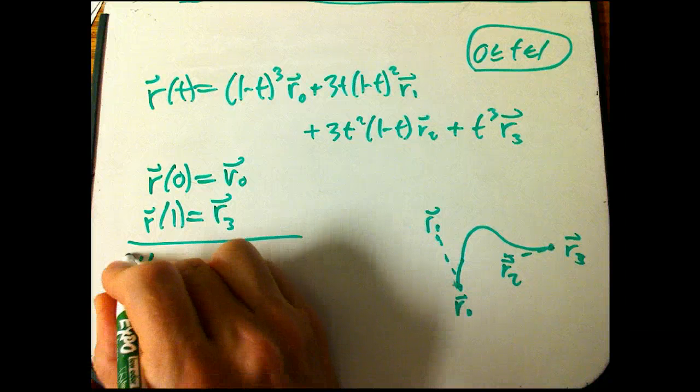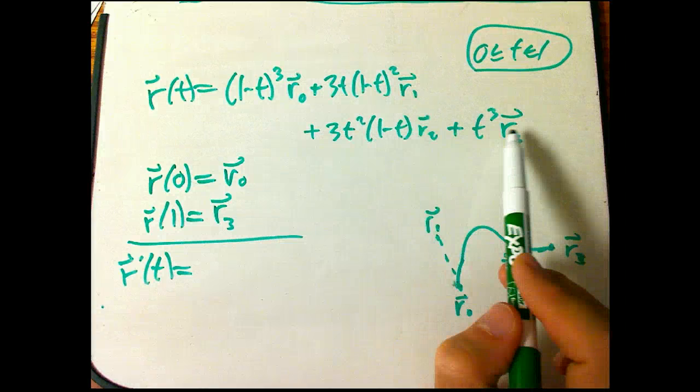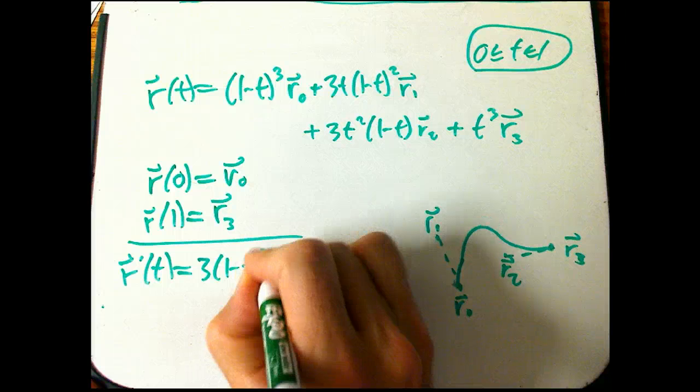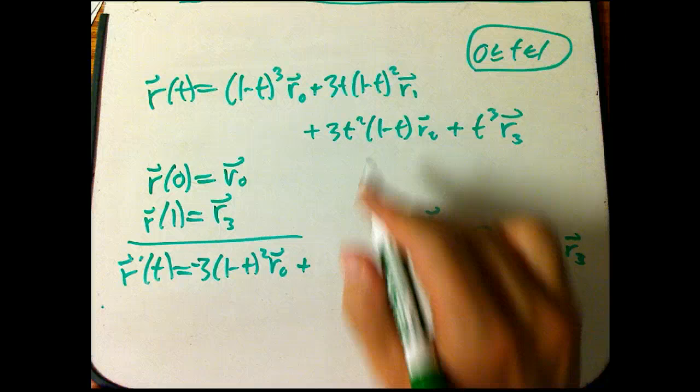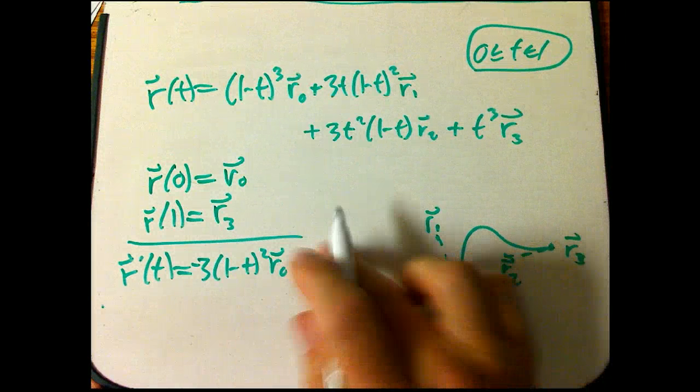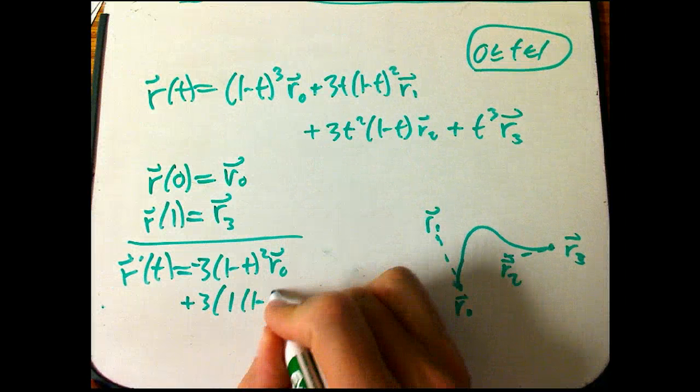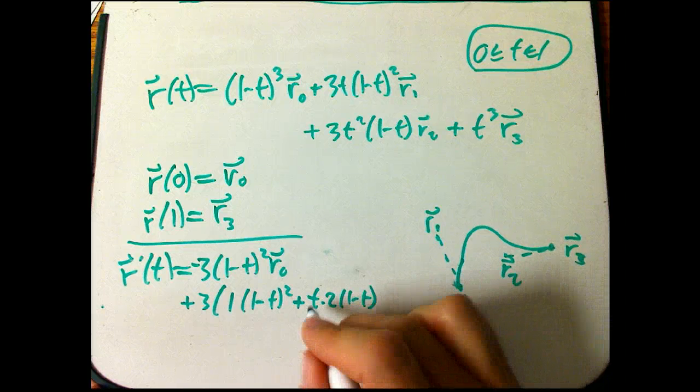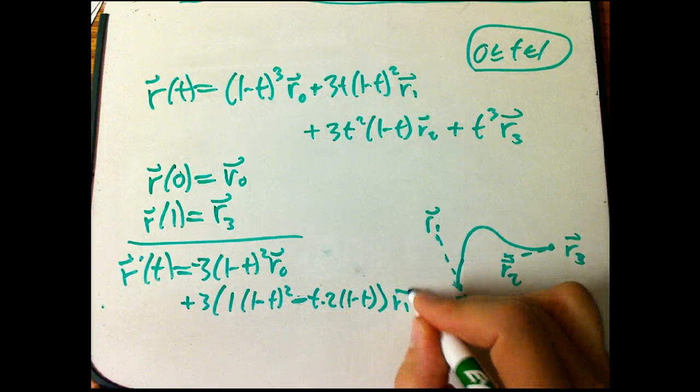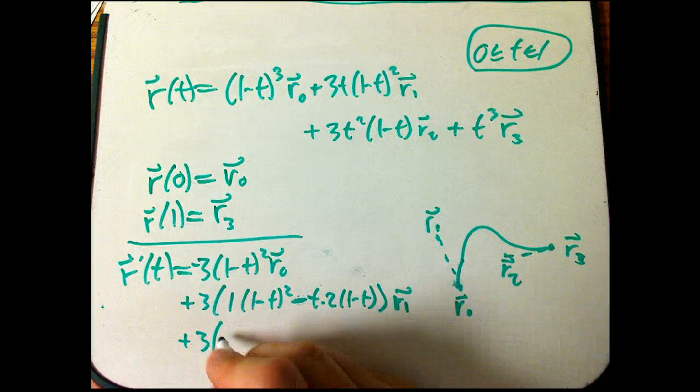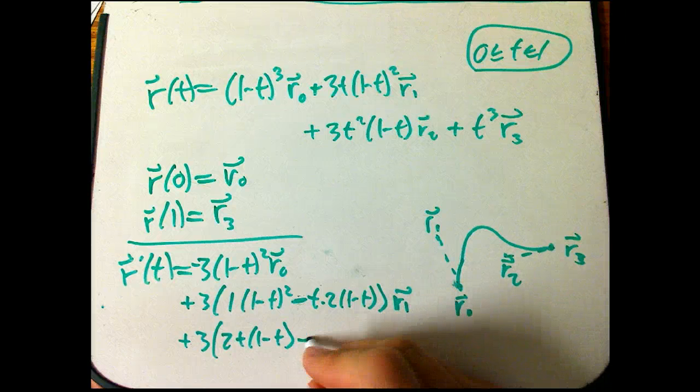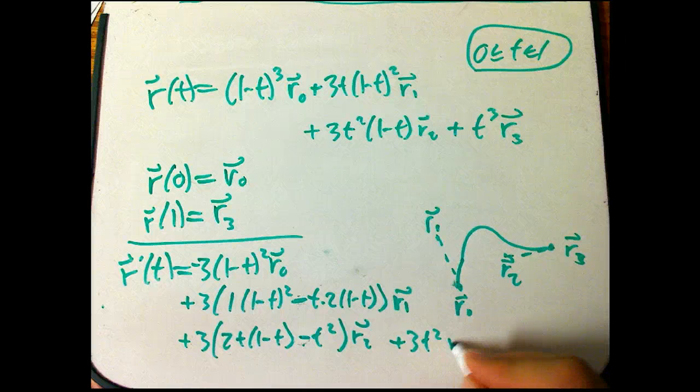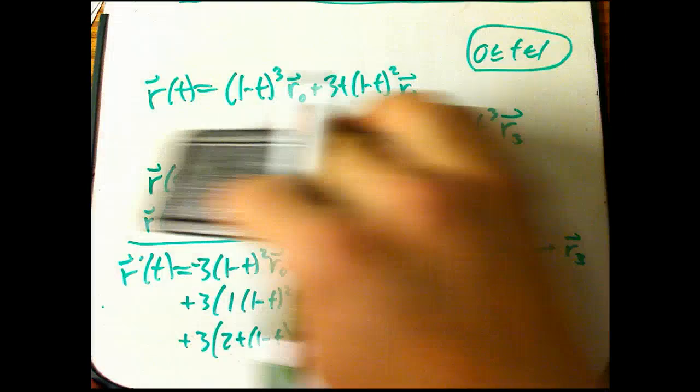Now, more interesting is the derivative. Let's take the derivative here. So this is where we can use the fact that these are just constant vectors. They're just going to stay along for the ride, just like any multiplicative constant does in calculus. And I'm going to take the derivative of that. So 3 times (1-t) squared times a minus 1 with a chain rule, times r0. Plus, we've got a little product rule here. 3 times the quantity, derivative of t is 1, (1-t) squared. And then plus t left alone times 2 times (1-t), with a minus sign again. So that's going to be minus. All times r1. We'll simplify that in a minute. Plus 3, quantity 2t times (1-t). And then plus t squared, derivative of (1-t), that's just plain minus 1, times r2. And then this is the easiest one, plus 3t squared r3.